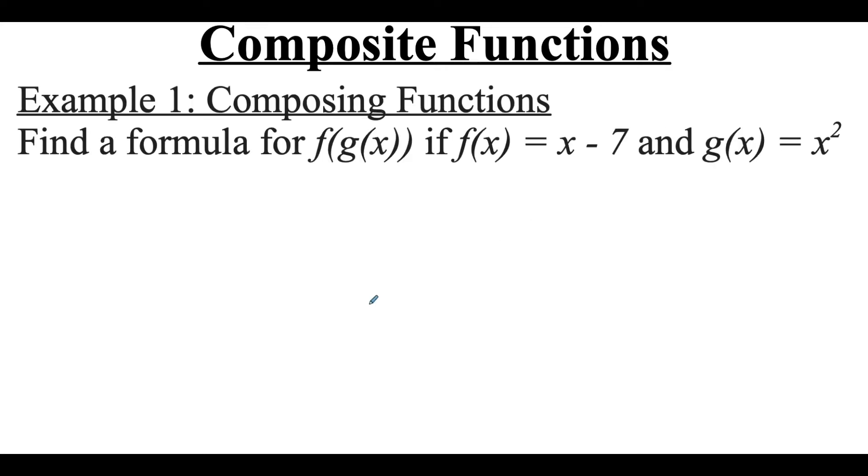In this first example we're going to do a little composition. We're going to find a formula for f of g of x if we know that f(x) = x - 7 and g(x) = x². What I like to do when I'm doing function composition is I always start with the function that's on the outside.